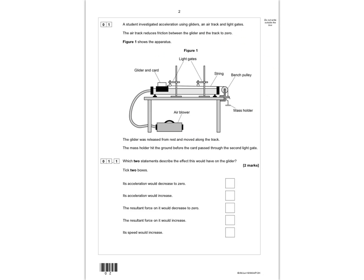The glider was released from rest and moved along the track. The mass holder hit the ground before the car passed through the second light gate. The question asks which two statements describe the effect this would have on the glider. If the mass hits the ground, the acceleration would decrease to zero because there's no force pulling it along, and the resultant force would decrease to zero. Those are the two correct answers.